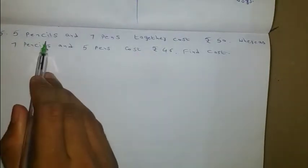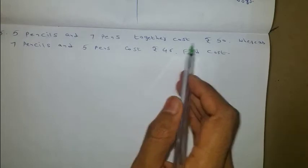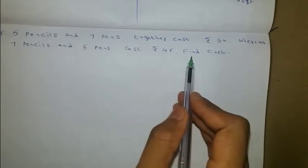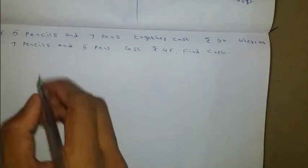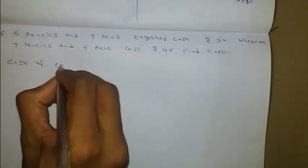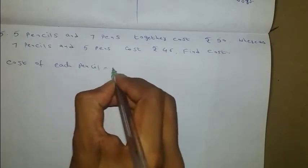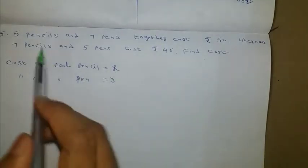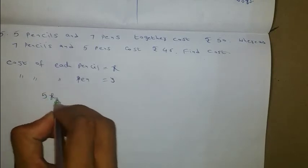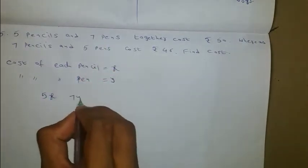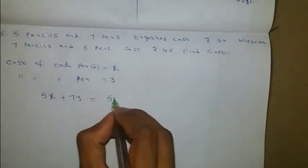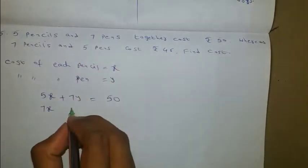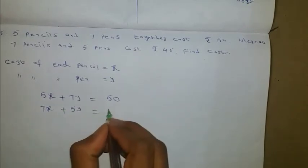5 pencils and 7 pens together cost 50 rupees, whereas 7 pencils and 5 pens cost 46 rupees. Find the cost of each pencil and each pen. Taking cost of each pencil as x and each pen as y: first condition gives 5x plus 7y equals 50, and second condition gives 7x plus 5y equals 46.